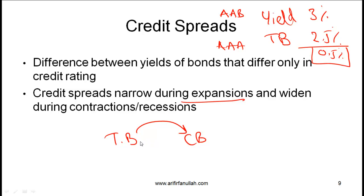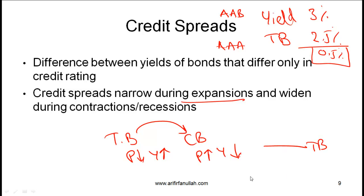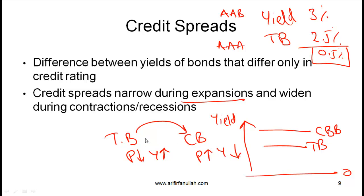When money flows away from Treasuries and towards corporate bonds, the price of Treasuries goes down and the yield goes up, whereas for corporate bonds the price goes up and the yield comes down. The yield on Treasuries will always be lower than the yield on corporate bonds. If times are good, the yield on Treasuries is going up and the yield on corporate bonds is coming down — hence the spread between corporate bonds and Treasury bonds becomes lower.